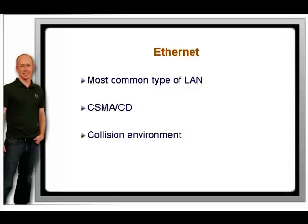The way Ethernet works is closely linked to its original connection type. A coaxial cable was used to join all the hosts together, forming a segment. On a single segment, only one host could use the cable at a time. Because the wire was coaxial, with one positive and one negative conductor, it created a single electrical circuit that could be energized by only one host at a time. A conflict would result as two hosts tried to talk at once — much like using walkie-talkies, where all that is heard is noise. This conflict is called a collision.